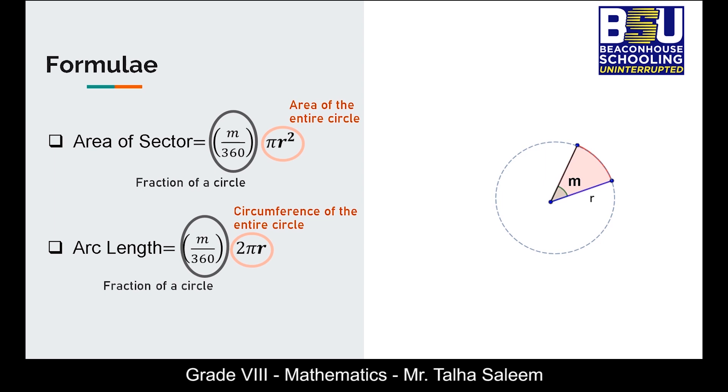Now the perimeter of a circle can simply be calculated by adding the boundaries of the sector. It obviously has 2 radii and 1 arc length. So the formula for perimeter is given by 2r plus arc length.